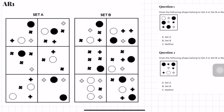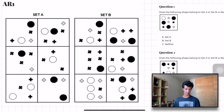Now let's look at set B. One box has three pluses and three circles; another has two circles, two pluses, and two X's — so again the X's seem irrelevant and the same equal-count rule appears to apply. Since they can't share the same rule, there must be a further discriminating feature, most likely color. In set A the circle and the plus are opposite colors, whereas in set B they are the same color. So in set A a black plus equals a white circle, and in set B a black plus equals a black circle.